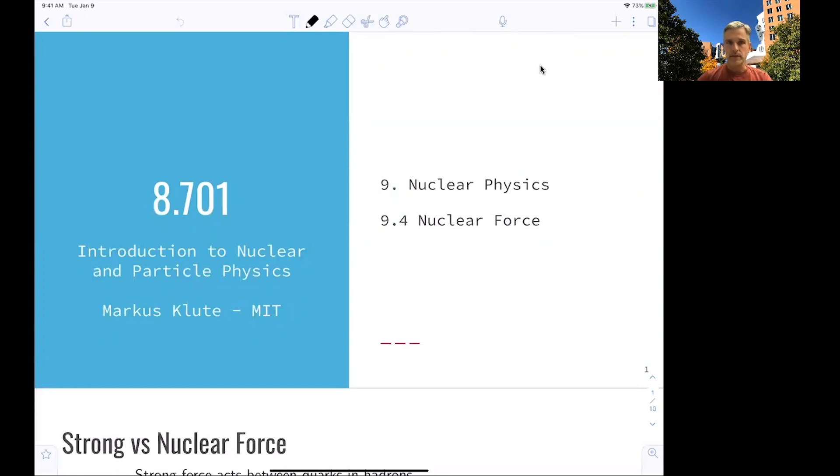In the last lecture, we saw that nuclei bound together. And we were able to calculate using an empirical model the binding energy of various nuclei. Now, the question remains, what is actually binding those nuclei together?